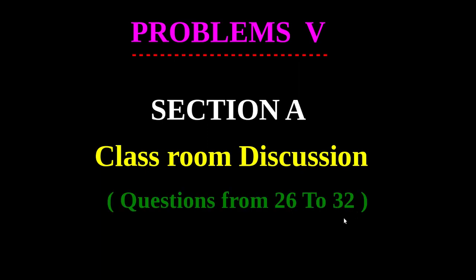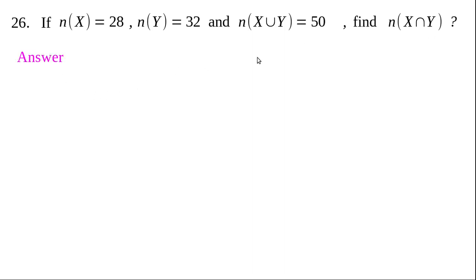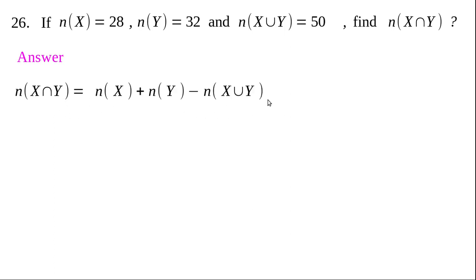Now let us do problems 26 to 32. Question 26 is very simple. We are given n(X), n(Y), and n(X∪Y), and asked to find n(X∩Y). The formula is n(X∩Y) = n(X) + n(Y) - n(X∪Y). Replace the values: 28 + 32 - 50 = 10. The answer is 10.